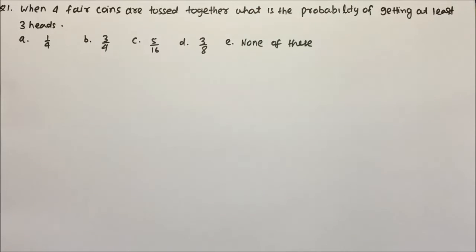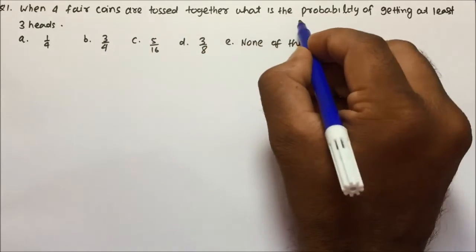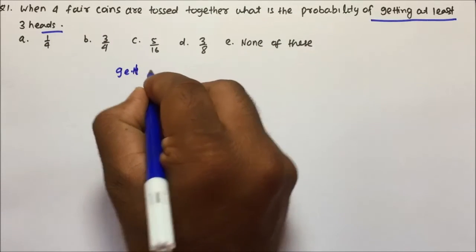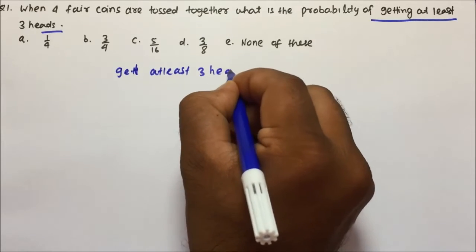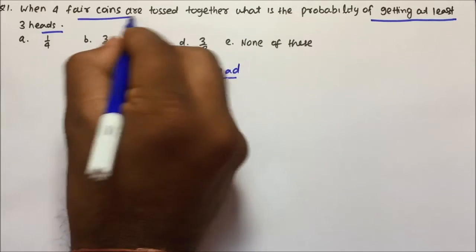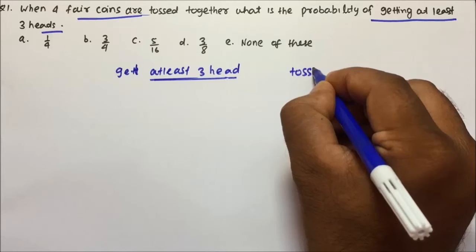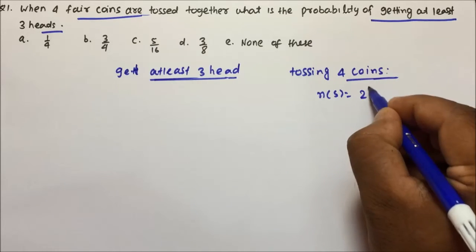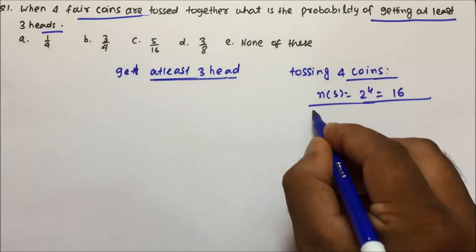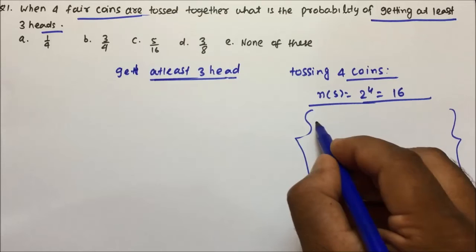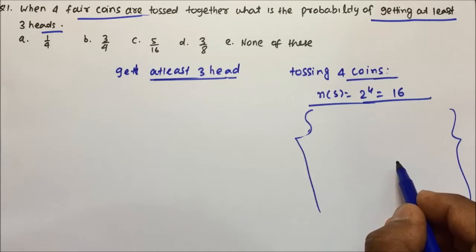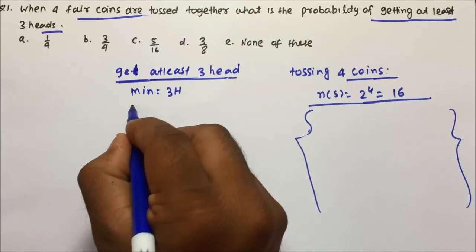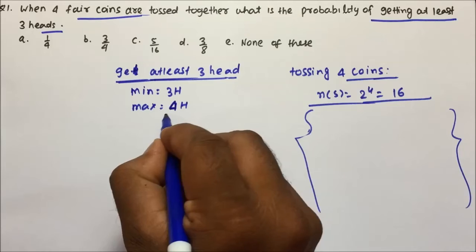Now let us solve a problem. Question 1: when 4 fair coins are tossed together, what is the probability of getting at least 3 heads? Your requirement is to get at least 3 heads. You are tossing 4 coins, so the total outcomes will be 2 to the power 4, which equals 16. At least 3 heads means minimum 3 heads; the maximum you can get is 4 heads.